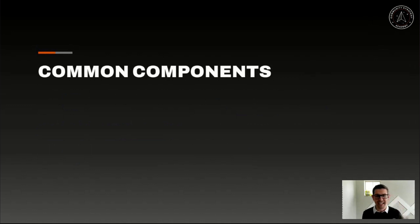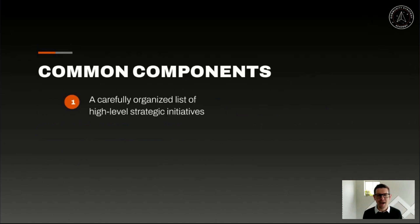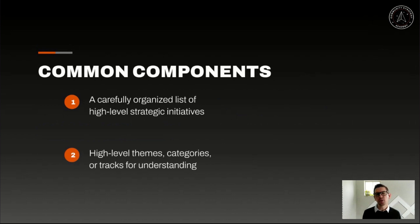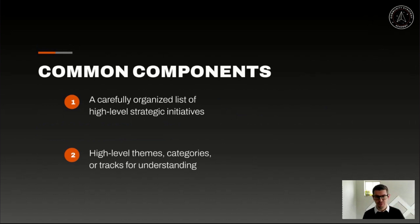Some common components - and I'll give you the course for free if you want to spend more time on it. A carefully organized list of strategic initiatives - if nothing else, a roadmap should be: here's the things we're focusing on, here are the big rocks we know we have to do. You also want some high-level themes, categories, tracks - whatever you want to call them. I'm going to show you some real examples you can just steal from me and go use.